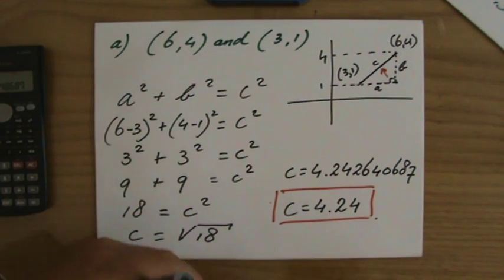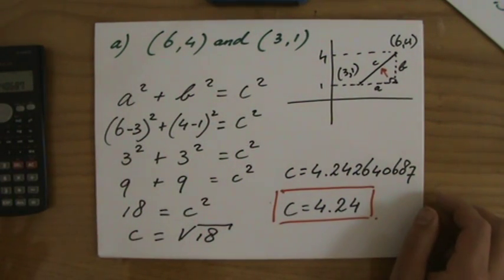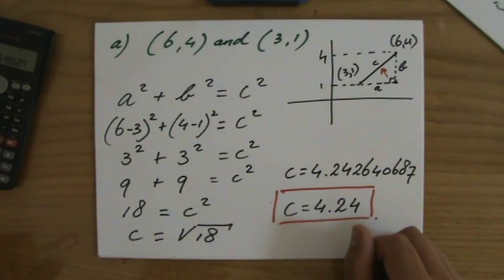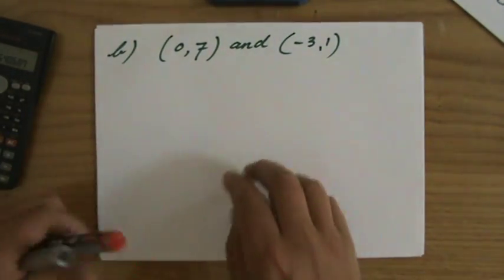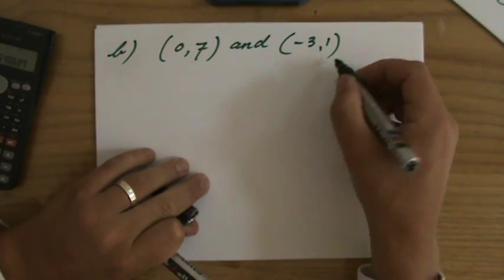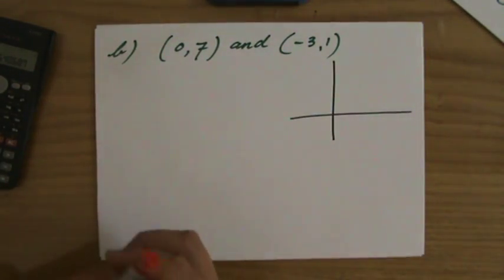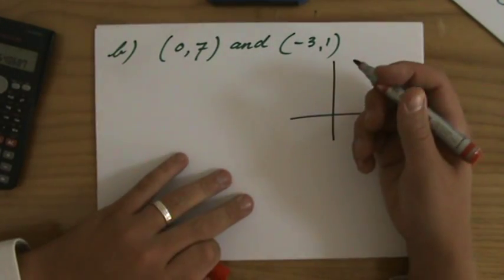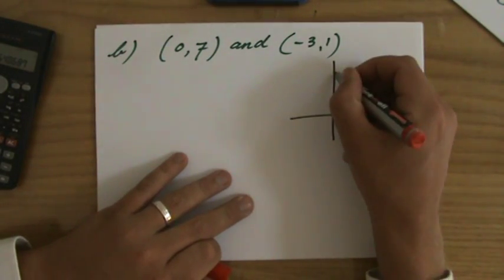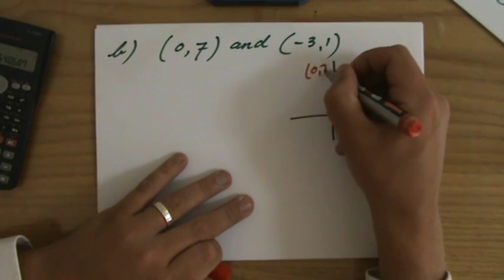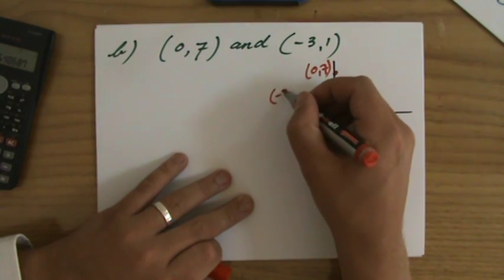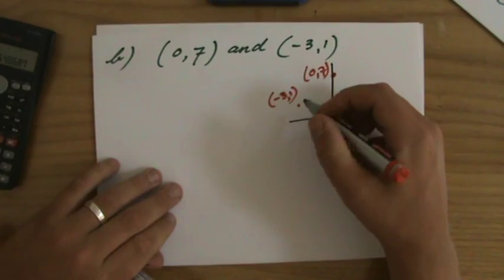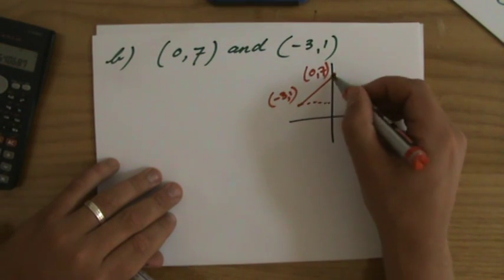Perhaps you want to pause it before we go to the next question. The next question is, what is the length of the line between these two points? I will go a little bit quicker now. We sketch it, because I do not remember any formula. (0,7), that'd be roughly over there, and (-3,1), roughly over there. We're interested in the length of that line, and we turn that into a right angle triangle.